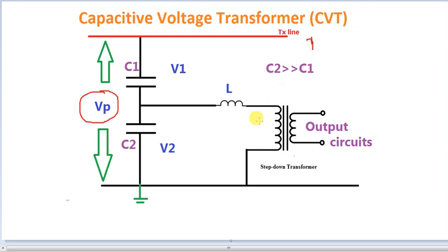So if you do the insulation cost, you will find the rate, and you will find the Capacitor Voltage Transformer. How does it work? We have only the cost effect — now we are doing the two capacitors and the divider.